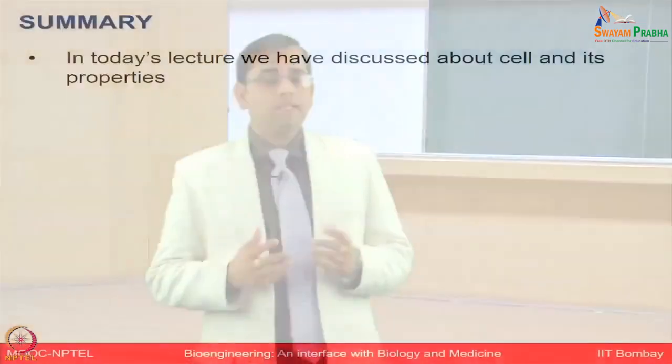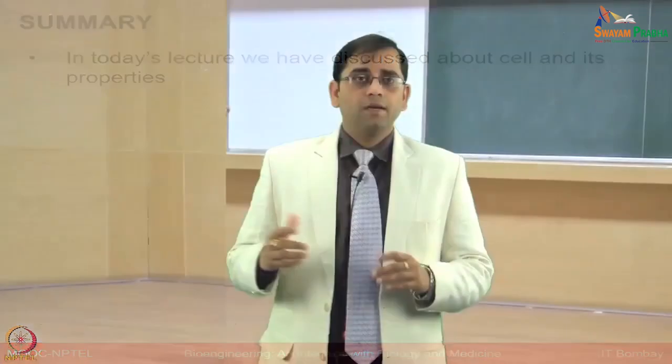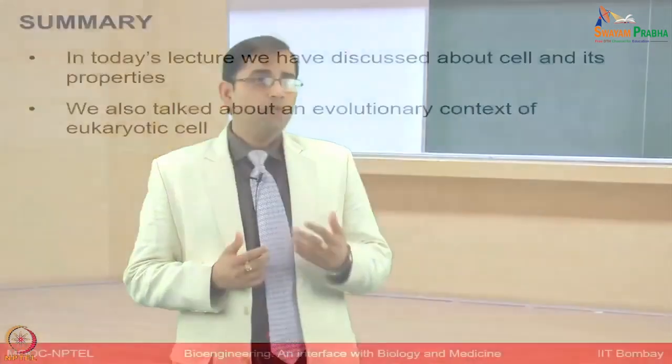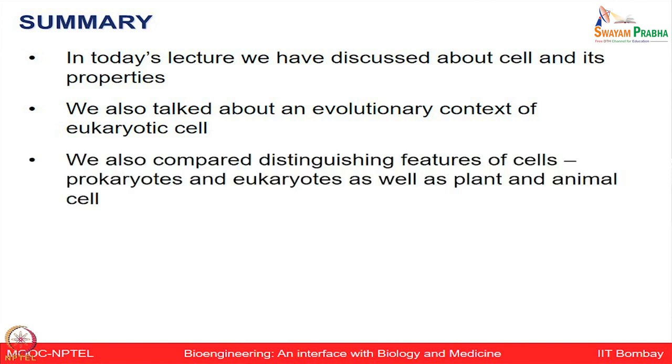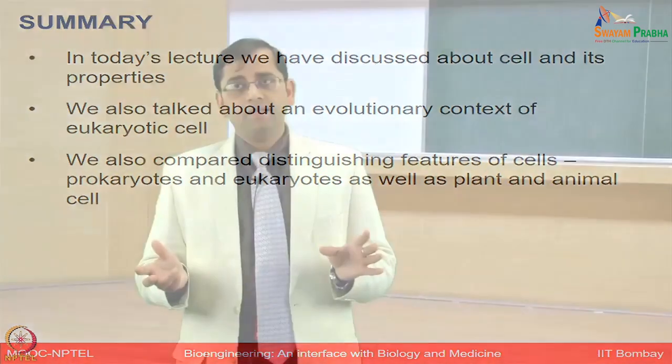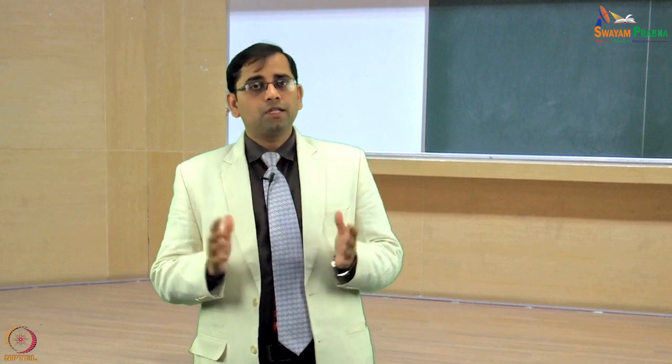To summarize today's lecture: we started by discussing the cell and its properties. We talked about how specialized organelles like mitochondria and chloroplast would have evolved and the evolutionary context for that. We had a broad overview of prokaryotic and eukaryotic cells, plant and animal cells, and then moved to cell communication — from short-distance signaling to long-distance signaling. This gives a good foundation for understanding life processes, cells, and different cell organelles. We will continue discussing these fundamental concepts in the next lectures.